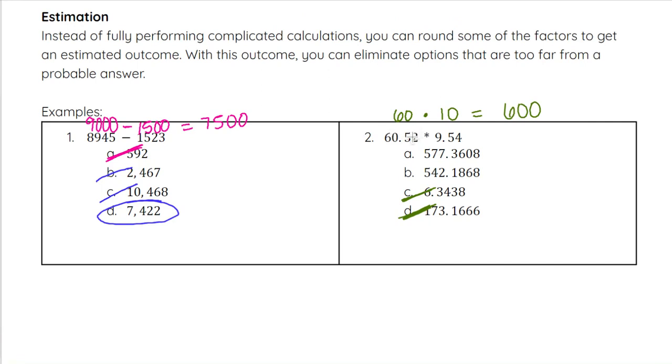You did round the 60.52 down and the 9.54 up, so A is going to be your answer for this one. But you could solve at that point, you could actually multiply them out using long multiplication, or you could go with the one that is closest to that 600, the 577.3608. That is the correct answer, but for sure you can eliminate C and D with this specific technique.